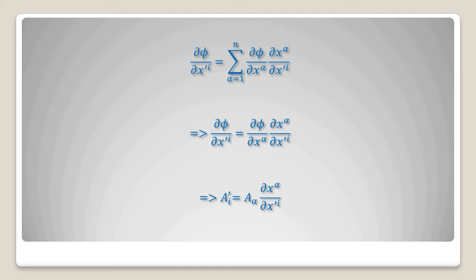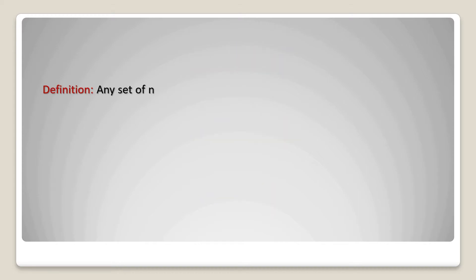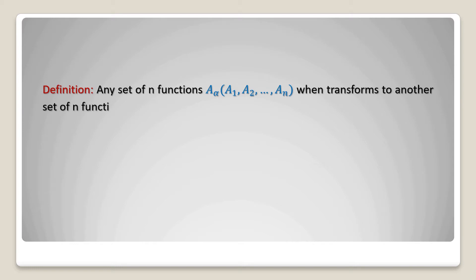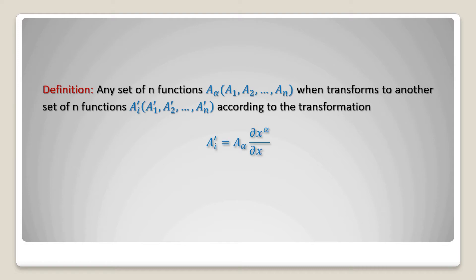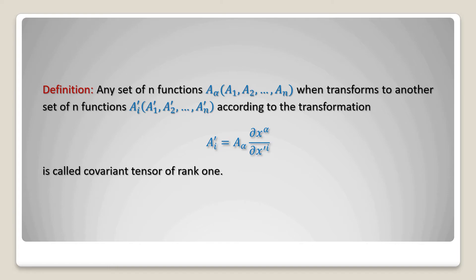The left hand side can be written as a prime lower suffix i, equal to a lower suffix alpha into del x alpha by del x prime i. Definition: any set of n functions a lower suffix alpha, where alpha goes from 1 to n, when it transforms to another set of n functions a prime lower suffix i, where i goes from 1 to n, according to the transformation a prime lower suffix i equals a lower suffix alpha into del x alpha divided by del x prime i, is called a covariant tensor of rank 1.